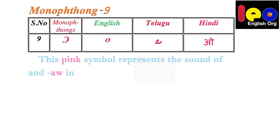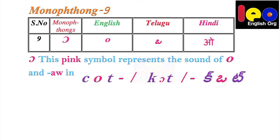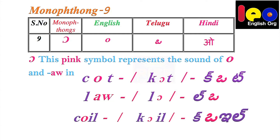Monophthong 9. This pink symbol represents the sound of O in 'cot,' the sound of AW in 'law,' and the sound of O in 'coil.' This symbol must be taken as the sound of O.